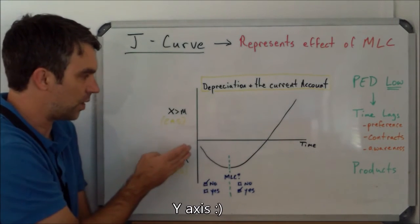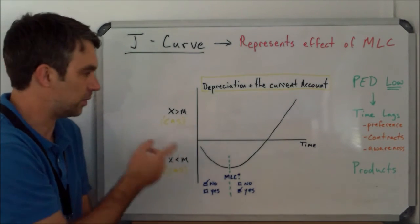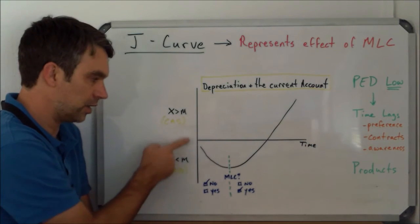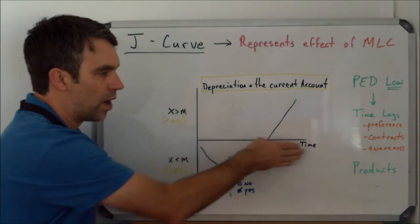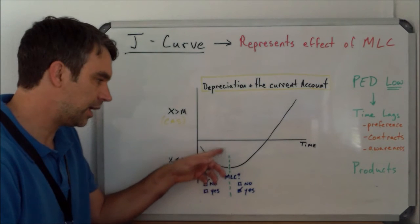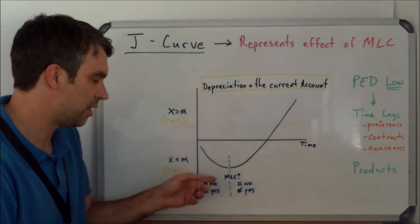On the Y-axis, what we have is the current account balance. Anything above the line is a current account surplus, so X is greater than M, and anything below the line is a current account deficit. The X-axis is time. Up until the green line, the Marshall-Learner Condition is not satisfied.